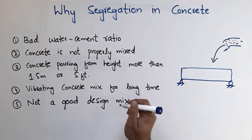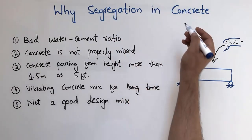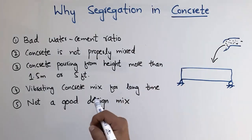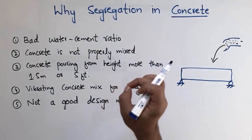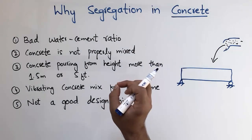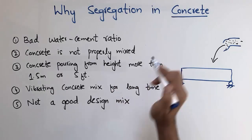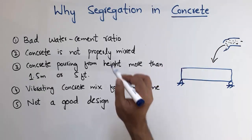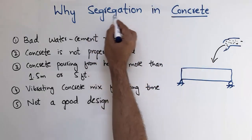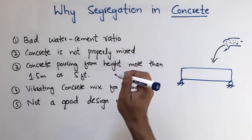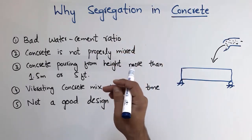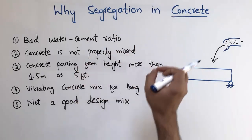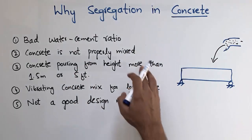Concrete is usually a composition of different components: water, cement, fine aggregate, and coarse aggregate. All these combine to form the concrete mix. Segregation is a phenomenon in concrete which occurs due to the bad mixing of these components.